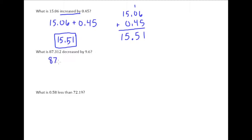So we have 87.312 and we're subtracting off 9.6. So again, we'll set that up vertically. Oops, I made a little mistake there. So set it up vertically, 87.312 minus 9.6. Again, lining up decimal points and place values.